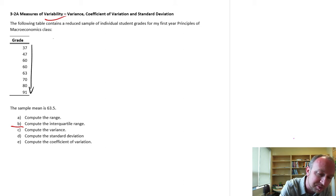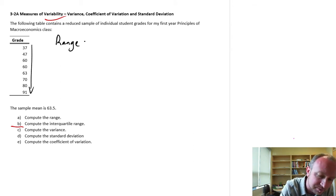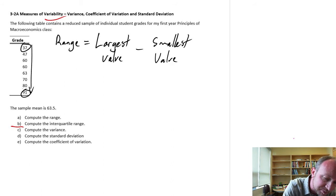The range is probably the easiest, the most simplistic measure of the spread of observations. All you need to consider for the range is the difference between the largest value and the smallest value. So all we need are the two endpoints. And if I already have this data sorted from smallest to largest, well, they're easy to spot. So my range here is simply 91 minus 37.